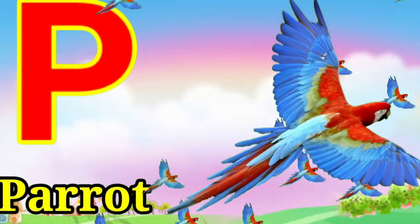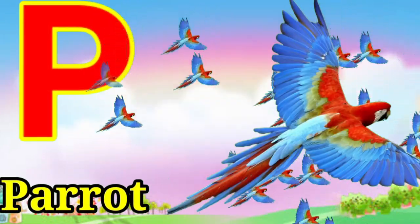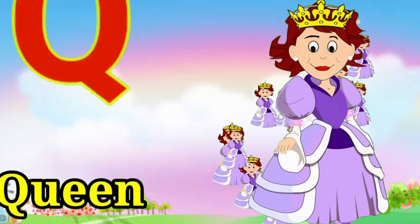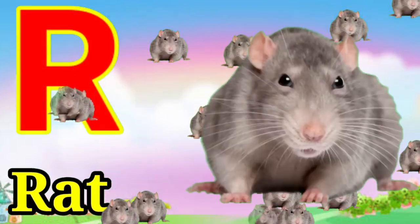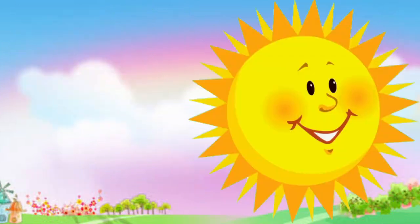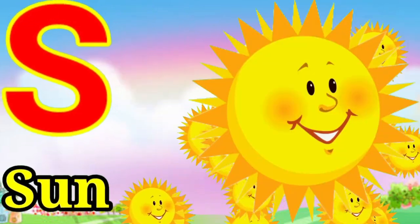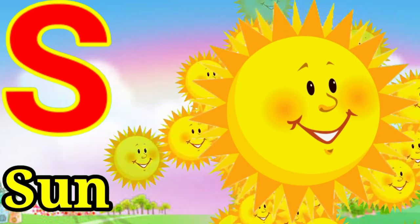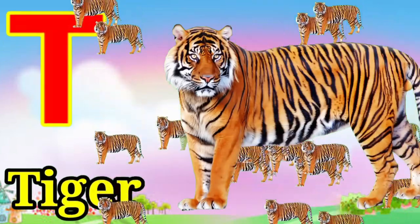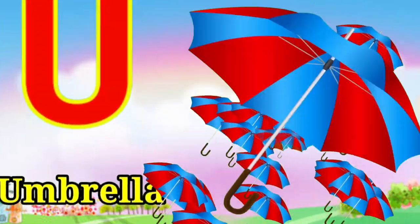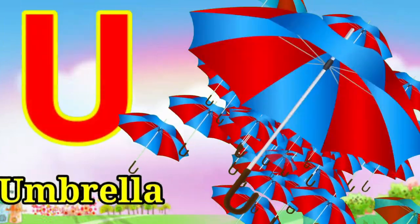P for parrot, Q for queen, R for rat, S for sun, T for tiger, U for umbrella.